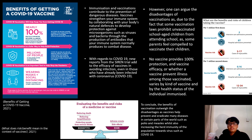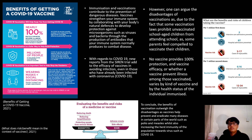Herd immunity refers to the protection provided by collective vaccination of individuals. However, one can argue that a disadvantage of vaccines is that some vaccination laws prohibit unvaccinated school-aged children from attending school, meaning some parents feel compelled to vaccinate their children. Some of the motivation for anti-vaccine campaigns is that parents would like to make healthcare decisions for their children without government interference. No vaccine can provide 100% protection, and vaccine efficacy varies by kind of vaccine and by the health status of the individual immunized. For instance, the flu vaccine is not as effective towards the elderly as it is towards young persons.